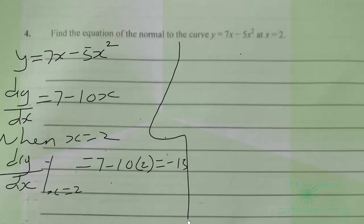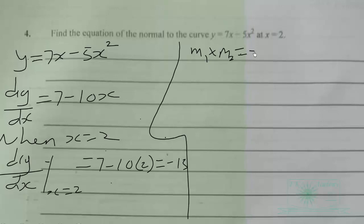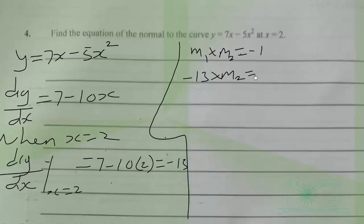We know that the gradient of the normal and gradient of the tangent meet at 90 degrees, so m1 times m2 should be equal to negative 1. In other words, negative 13 times the gradient of the normal, m2, should be equal to negative 1.